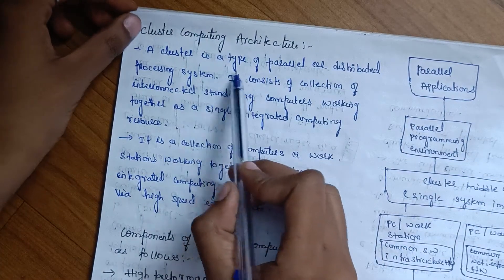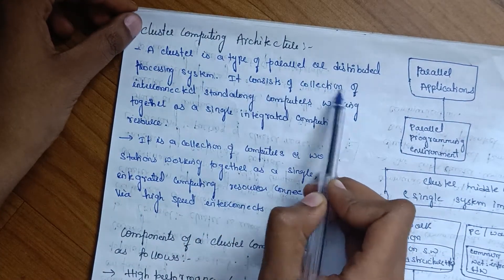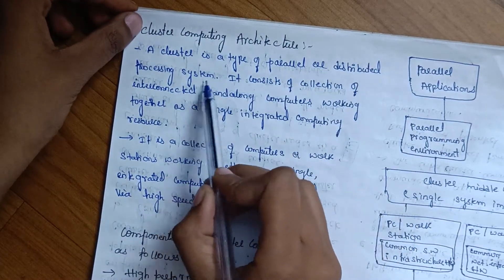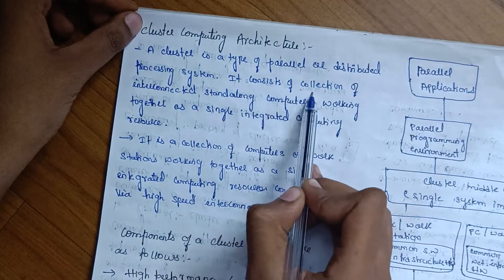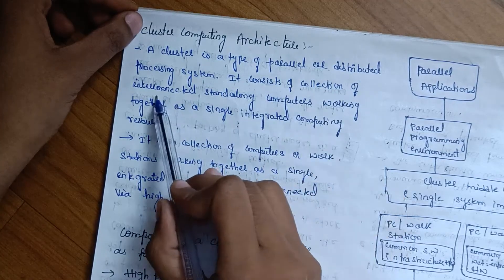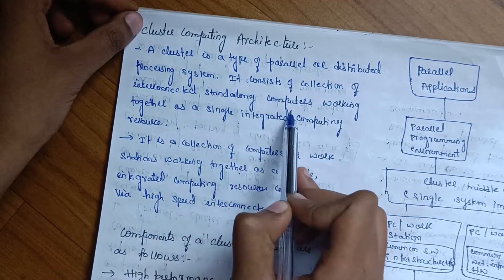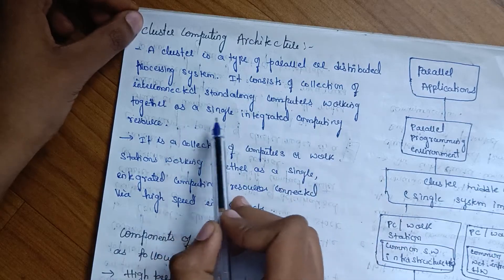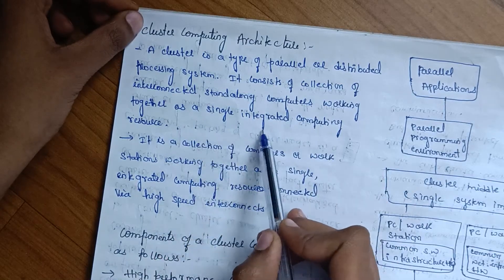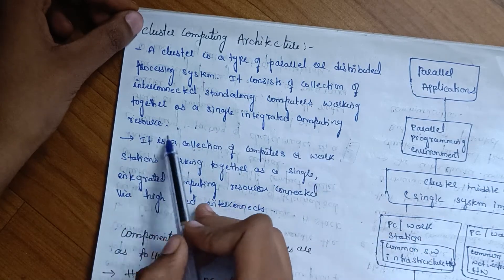A cluster is a type of parallel or distributed processing system. It consists of a collection of interconnected stand-alone computers working together as a single integrated computing resource.